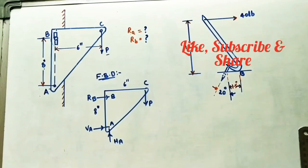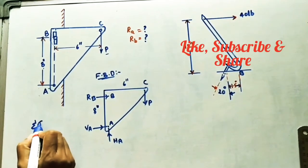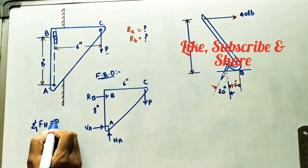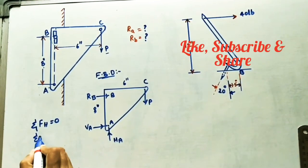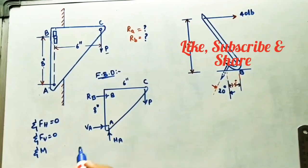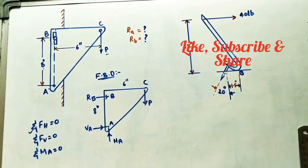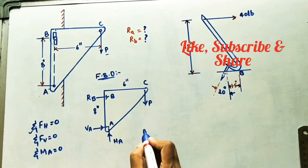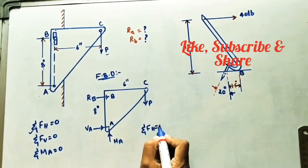To put the triangular plate in equilibrium, apply three conditions: sigma FH equals zero (sum of horizontal forces is zero), sigma FV equals zero (sum of vertical forces is zero), and sigma moment about point A equals zero.